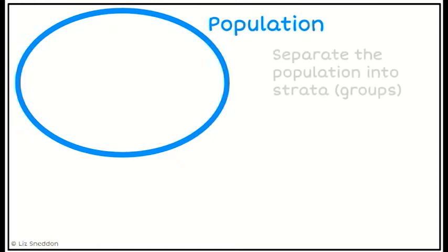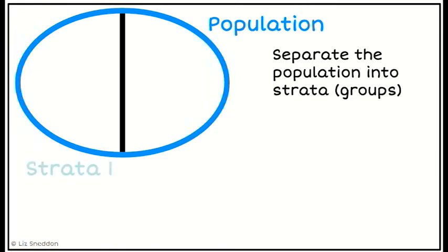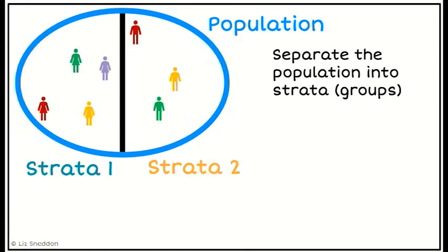So what we can do now for stratified sampling is we can separate that population into strata. So here I'm separating it into strata 1 and strata 2. You'll notice there that the females are on one side and the males on the other.